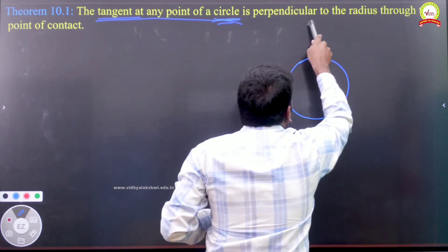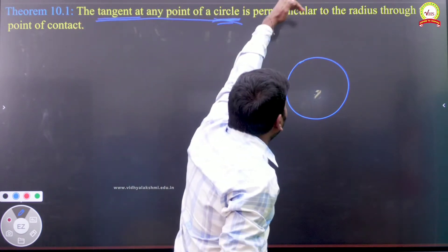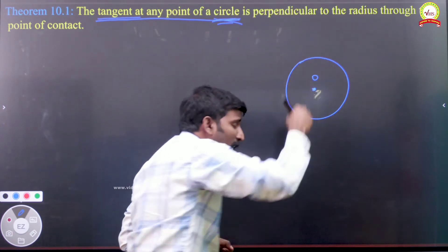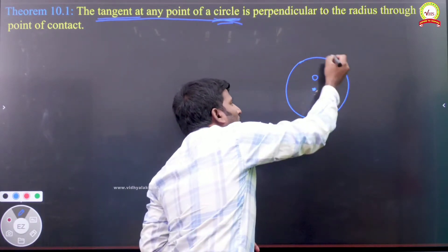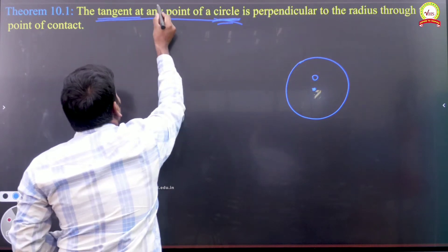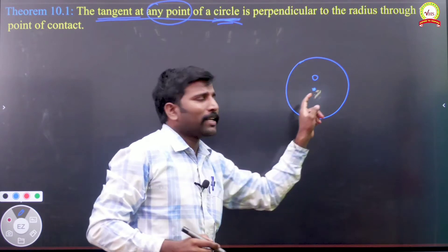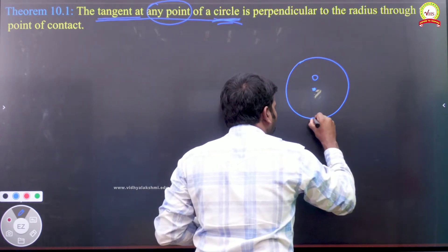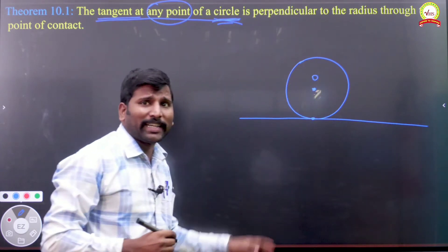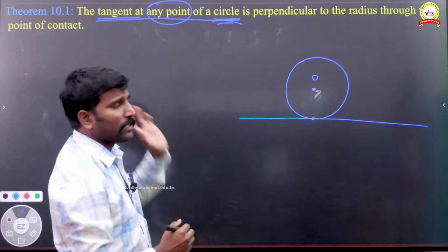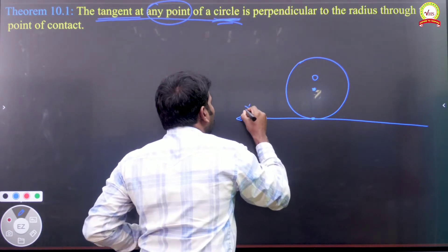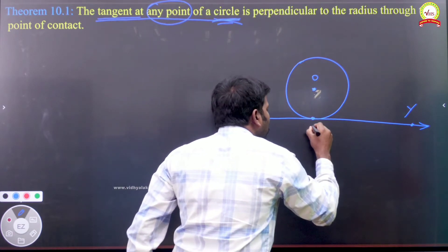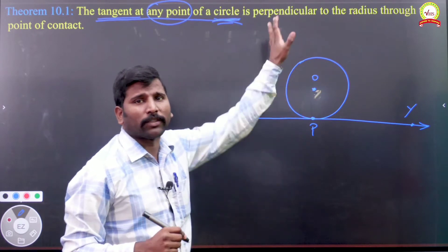Next, what they said is: the tangent is perpendicular to the radius. The center point O — through the center point O we have to draw the radius. The tangent at any point on the circle, any point you take — either left hand side, right hand side, above or bottom — wherever you take, not a problem. Suppose I am taking a point at the bottom. Let me draw a straight line. This straight line intersecting the circle at only one point is called the tangent.